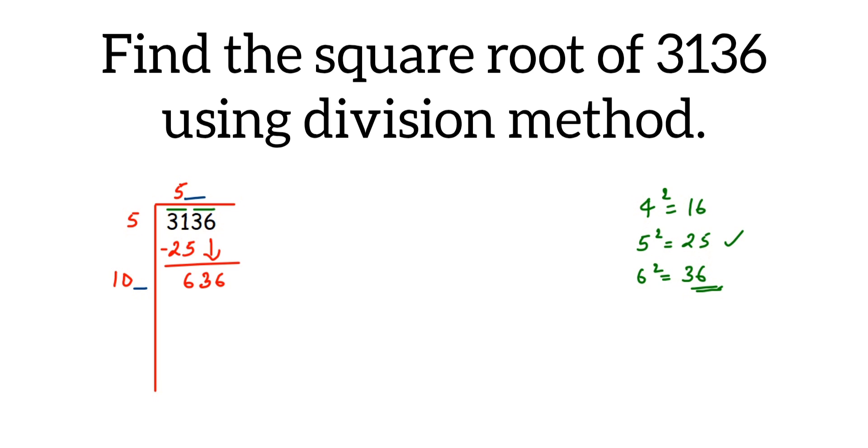So the easy way is we have 6 here at the end, right? And we know that these two numbers will be same. So think of a number whose square will give us 6 at the end. So 6 square is 36. This will give 6 at the end. And do we have any other number which will give 6 at the end? We have 4 square. So 4 square is 16. So these two numbers give us 6 at the end.